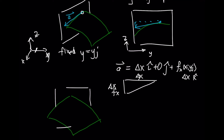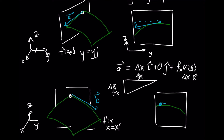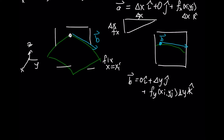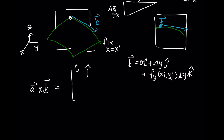Similarly, when we intersect our patch of surface area with a fixed plane in the y direction at x equals xi, we generate vector b. It will have zero contribution in the x direction, a delta y length in the y direction to match the size of the rij rectangle, and in the k direction the slope is given by the partial derivative with respect to y, fy, weighted by delta y. So to find the area of the parallelogram approximation, we take the cross product of these two vectors.